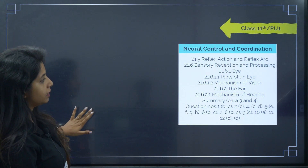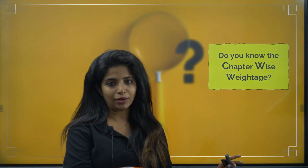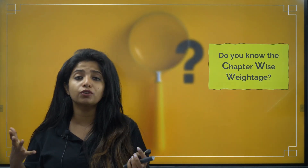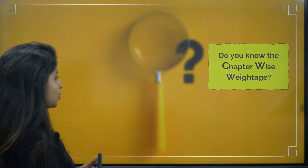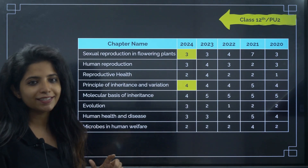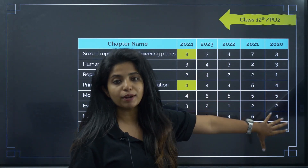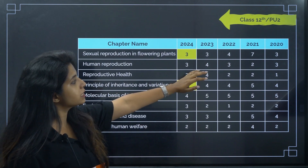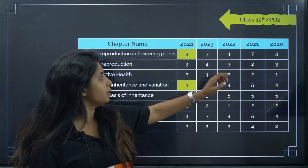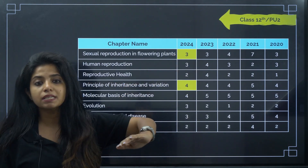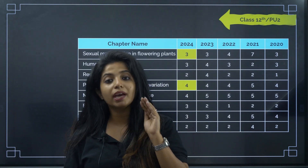Now let's discuss chapter weightage. You should have a clear idea of what's deleted and what's important to study. For KCET/NEET preparation, you need to know which chapters carry high weightage. This is an analysis based on KCET data. Sexual reproduction in flowering plants had 3 questions in 2020, went up to 7 in 2021, then 4, 3, and currently 3 — maintaining a minimum of 3 questions. Human reproduction also stays in the 2 to 4 question range consistently.